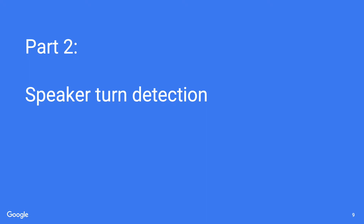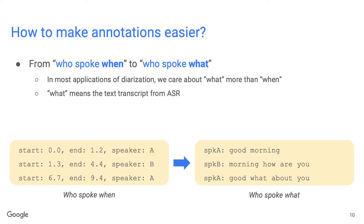So next, I'm going to talk about speaker turn detection. Since the annotation of time-annotated speaker labels is so expensive, we have been thinking about how to make the annotation task easier. The first idea is to change the problem from 'who spoke when' to 'who spoke what.' In most applications of diarization, we don't really care about when — what we really care about is the output text transcript from the ASR. For 'who spoke what,' each speaker label is associated with words, not timestamps, which is much easier to annotate.